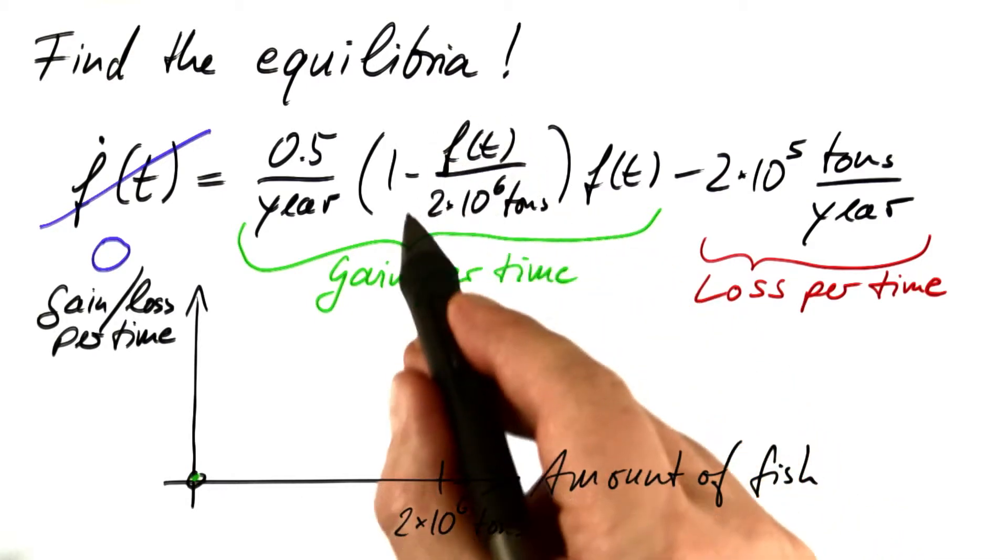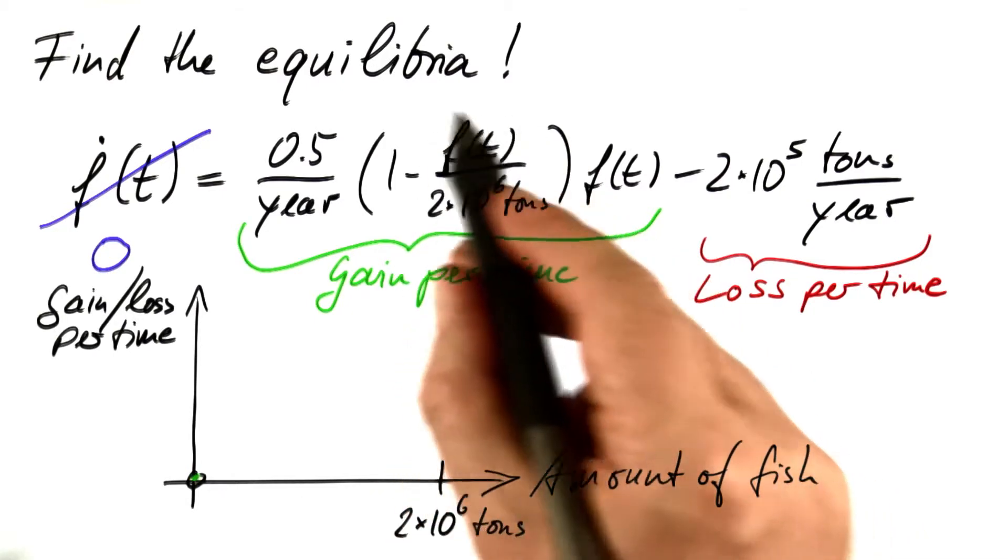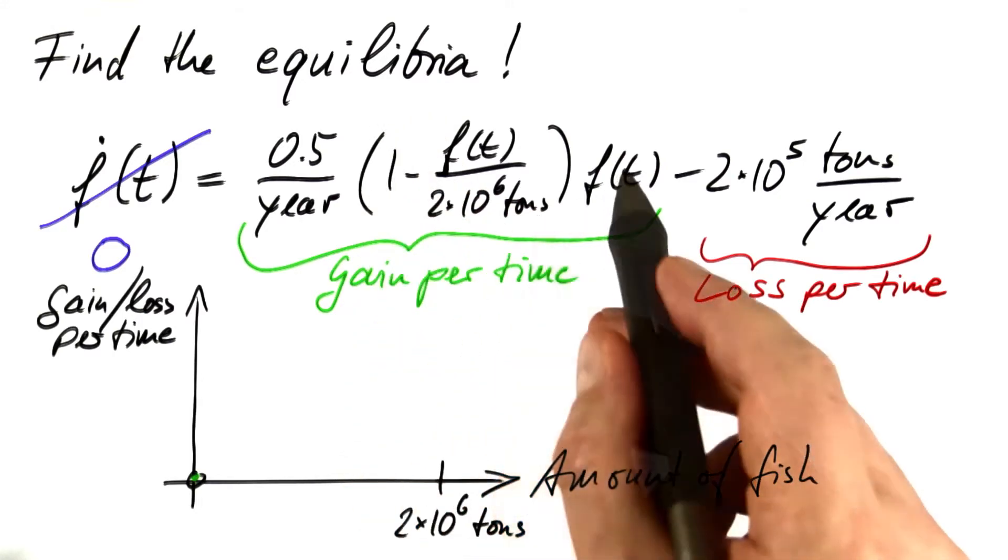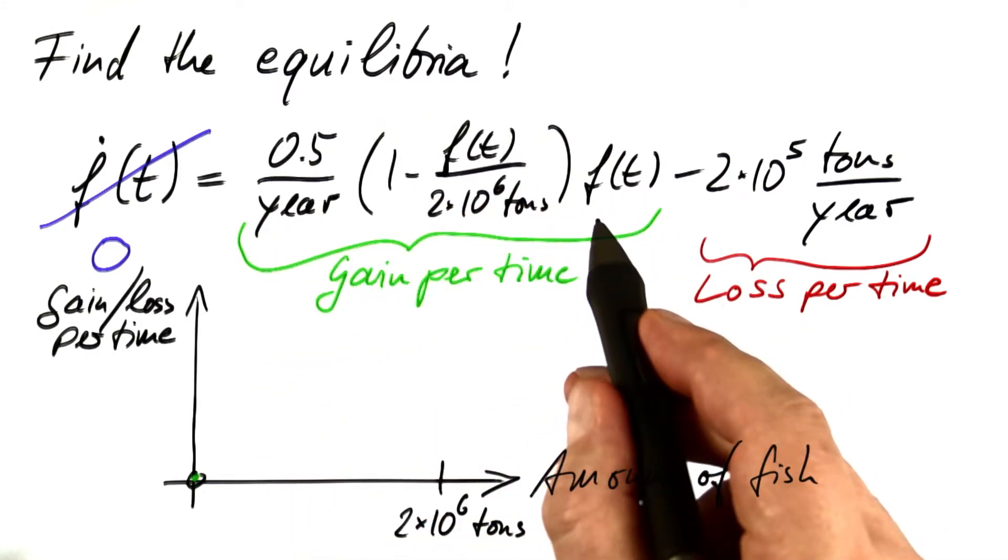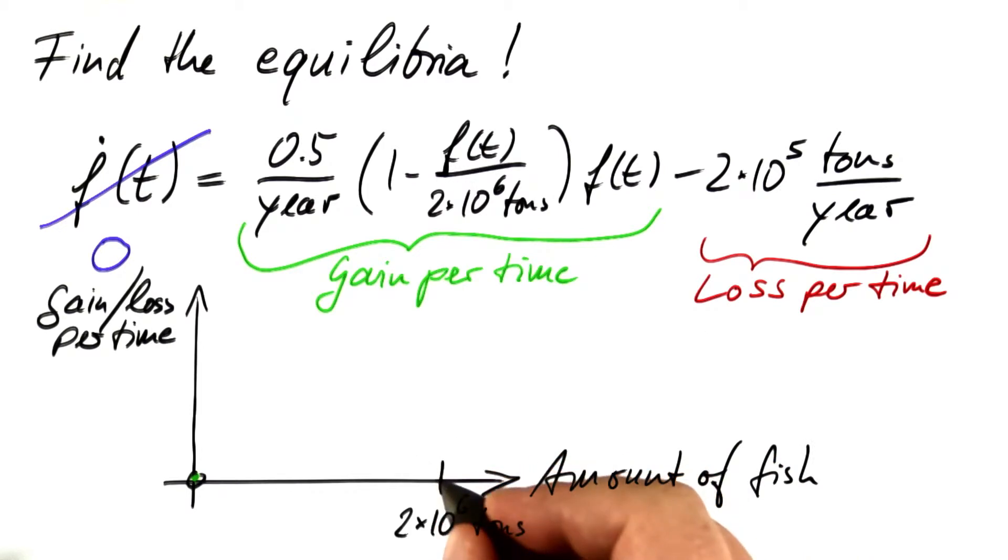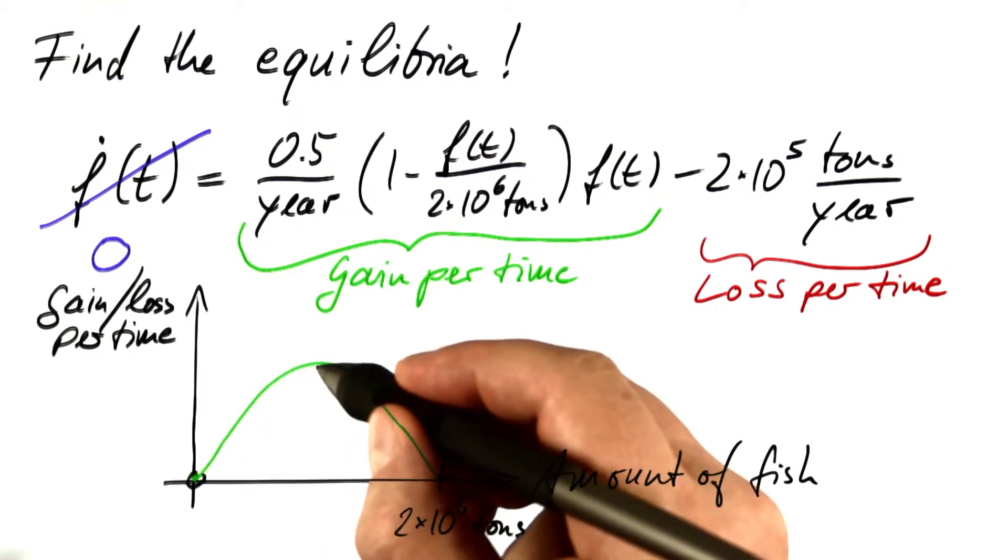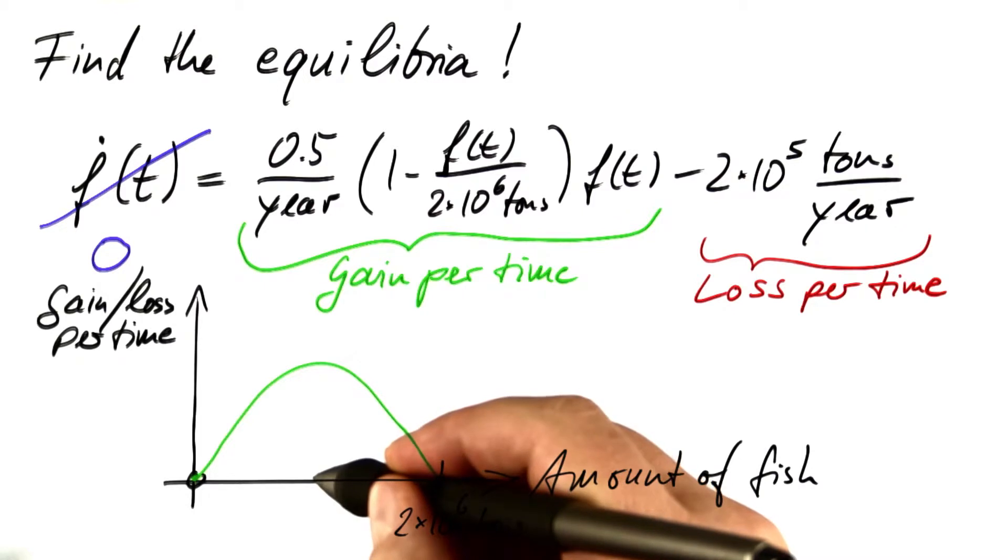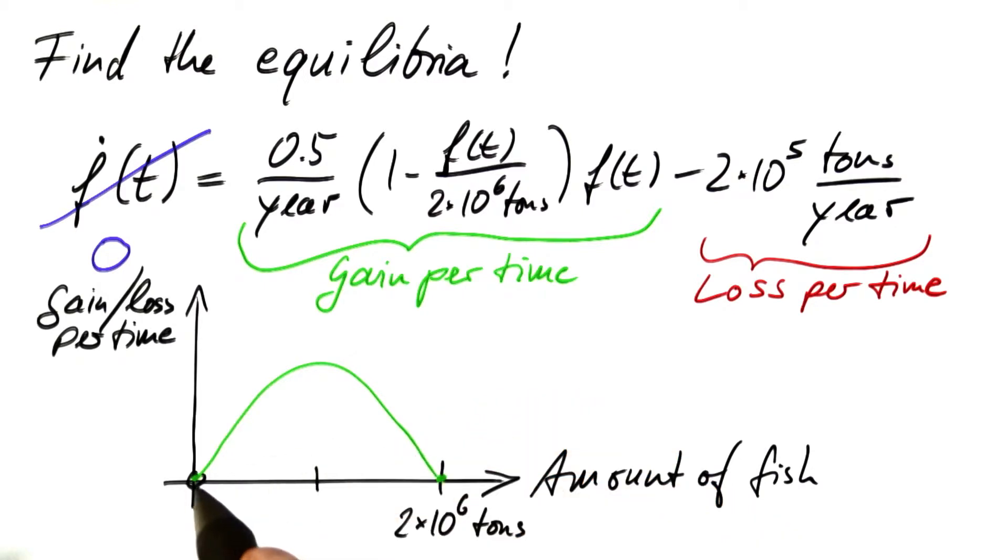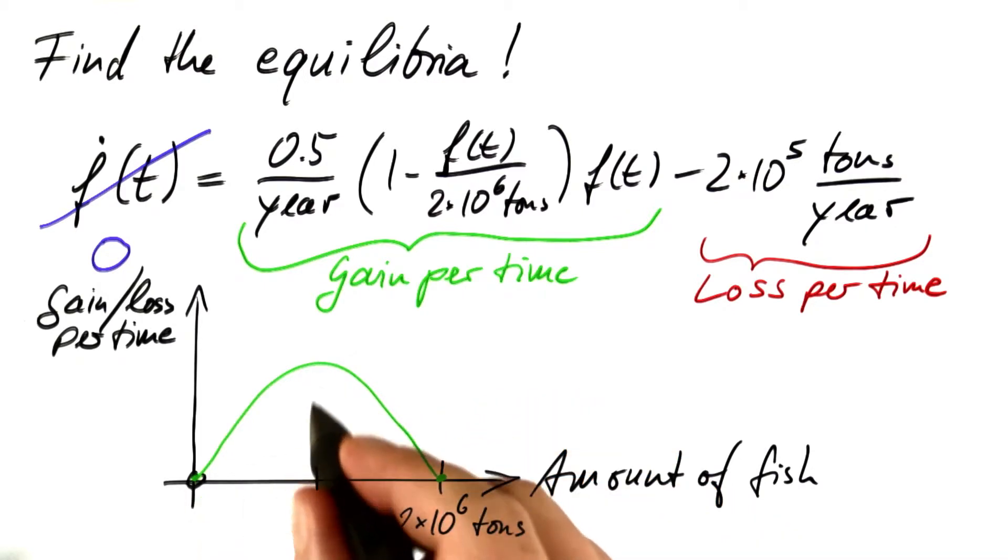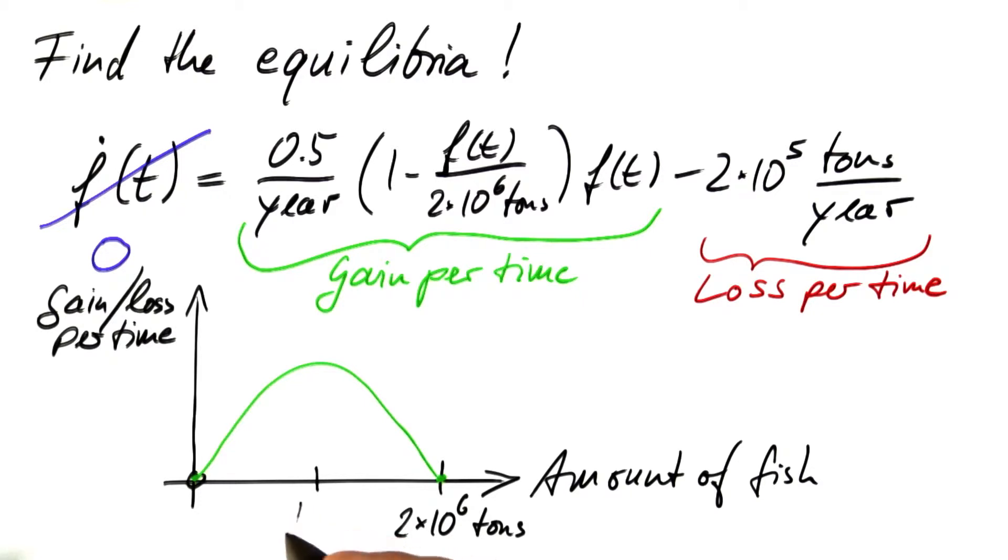When the amount of fish is equal to the maximum carrying capacity, this factor becomes zero and the product is zero again. So we know this point. As a parabola is symmetric, the maximum has to occur in the middle between the zeros. So this maximum sits at an amount of 1 times 10 to the 6 tons.